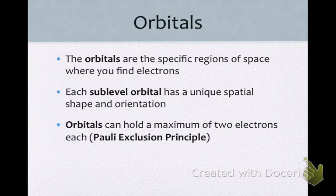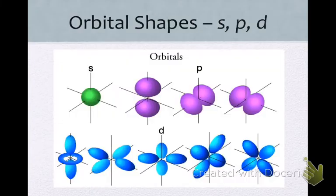The orbitals are now the specific regions of space where we would find the electrons. Each sublevel orbital, so I'm talking about an S-type orbital, or a P-type orbital, or a D-type orbital, or an F-type orbital. Each sublevel orbital has a unique spatial shape and orientation. And as we mentioned the Pauli exclusion principle before, orbitals can hold a maximum of two electrons each. So let's take a look at these orbital shapes.